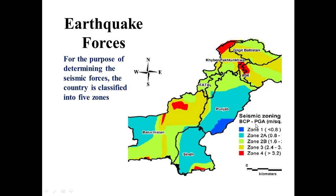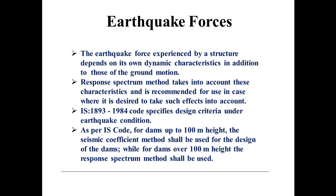For the purpose of determining the seismic forces, our characteristics are classified in five zones: Zone 1, Zone 2A, Zone 2B, Zone 3, and Zone 4, each with respective ground accelerations. This is the seismic diagram over the country — the red areas show where the intensity of earthquakes is very high. The earthquake forces experienced by a structure depend on its dynamic characteristics in addition to those of the ground motion. The response spectrum method takes into account these characteristics and is recommended for use where desired.